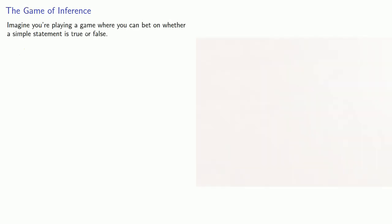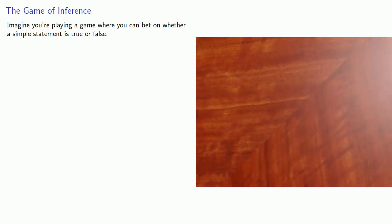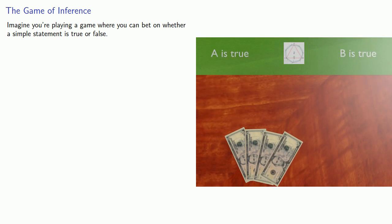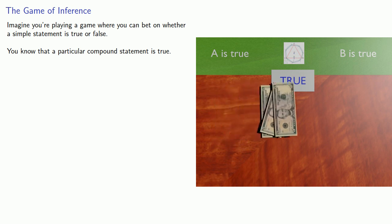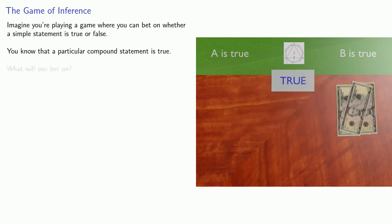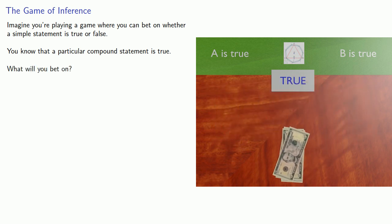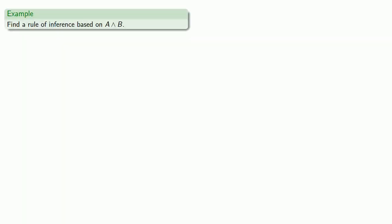One way to look at the rules of inference is to imagine you're playing a game where you can bet on whether a simple statement is true or false, and you know that a particular compound statement is true. The question you've got to ask yourself is: do you feel lucky? Or more specifically, what will you bet on?